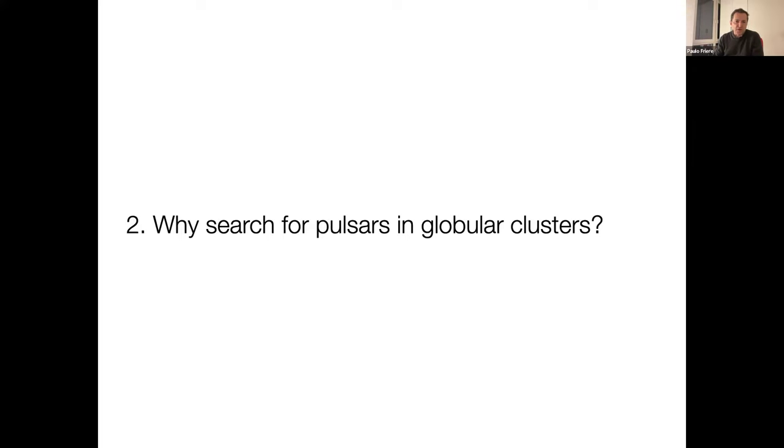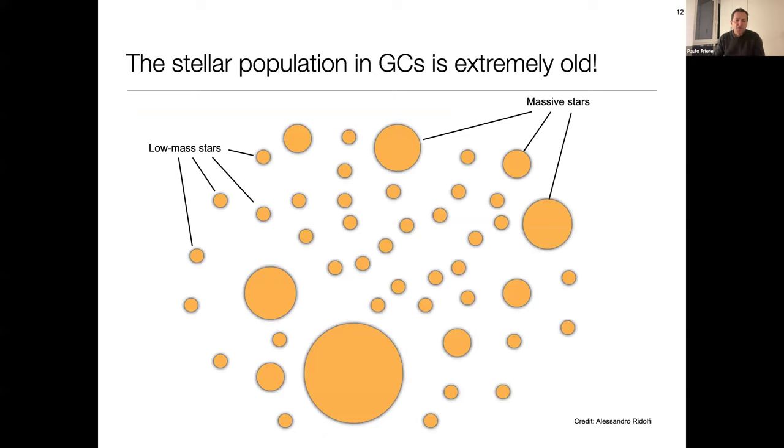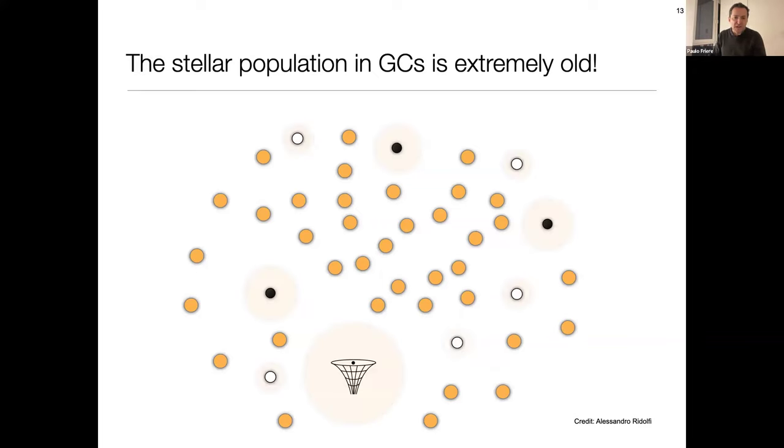So now I'm going to move to the motivation. Why do we look for pulsars in globular clusters? And the thing is, of course, the main thing about globular clusters that's interesting is that they have these very high stellar densities, which means that we can form objects at a time or binaries at a time possible in the galactic disk, and in particular via exchange interactions. One thing to keep in mind is that the stellar population in globular clusters is extremely old.